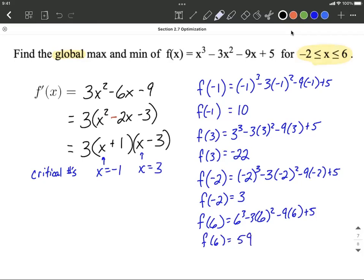So these are the values we actually want to be comparing. Just to be clear, we have 10, negative 22, 3, and 59. The very very biggest value is 59. So this is the global maximum.